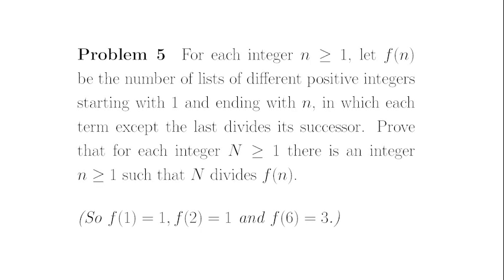Problem 5. For each integer n greater than or equal to 1, let f of n be the number of lists of different positive integers, starting with 1 and ending with n, in which each term except the last divides its successor. Prove that for each integer big N greater than or equal to 1, there is an integer n greater than or equal to 1, such that big N divides f of n.